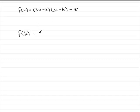So what we've got up here then is (3k - 2) multiplied by (k - k) and then minus 8. Well, k minus k is going to be 0, so you've got (3k - 2) multiplied by 0 minus 8.